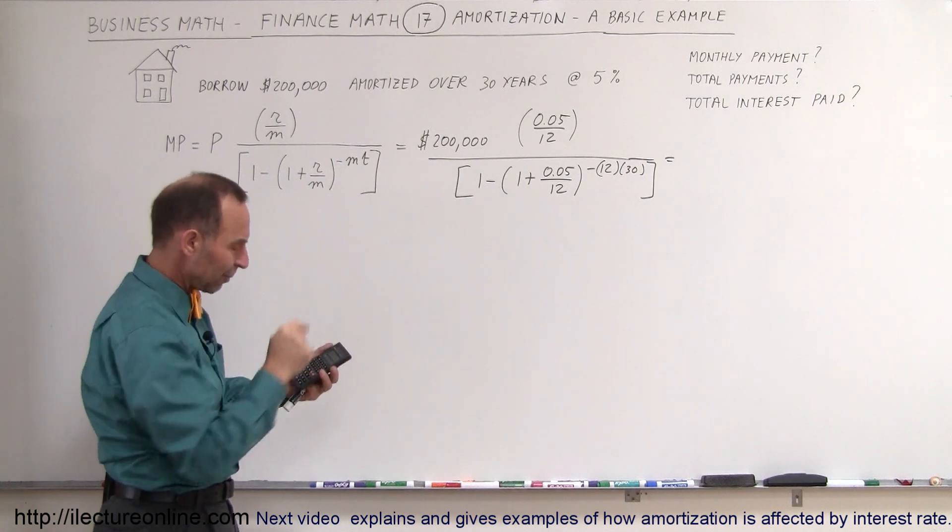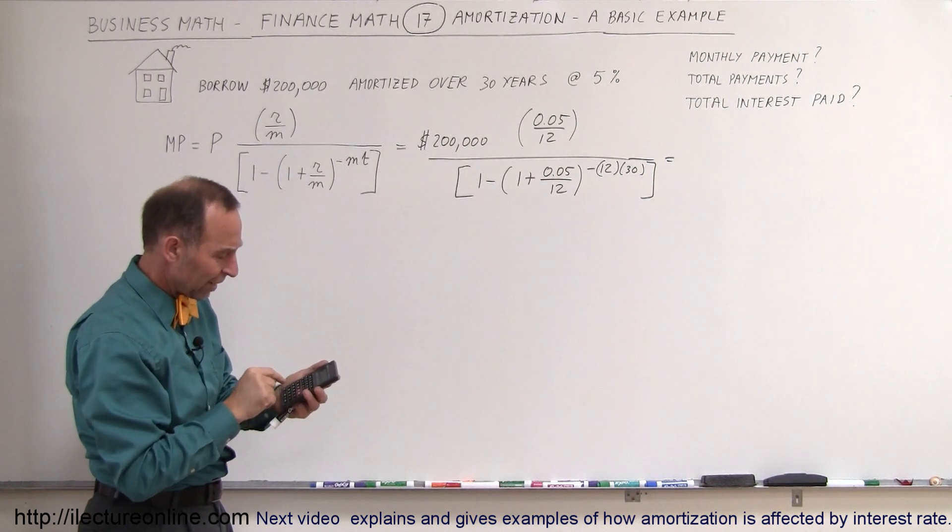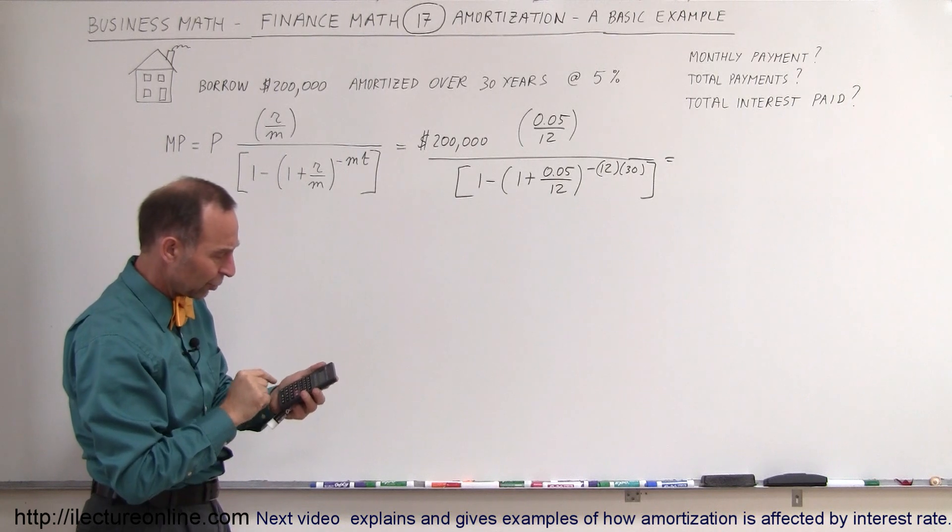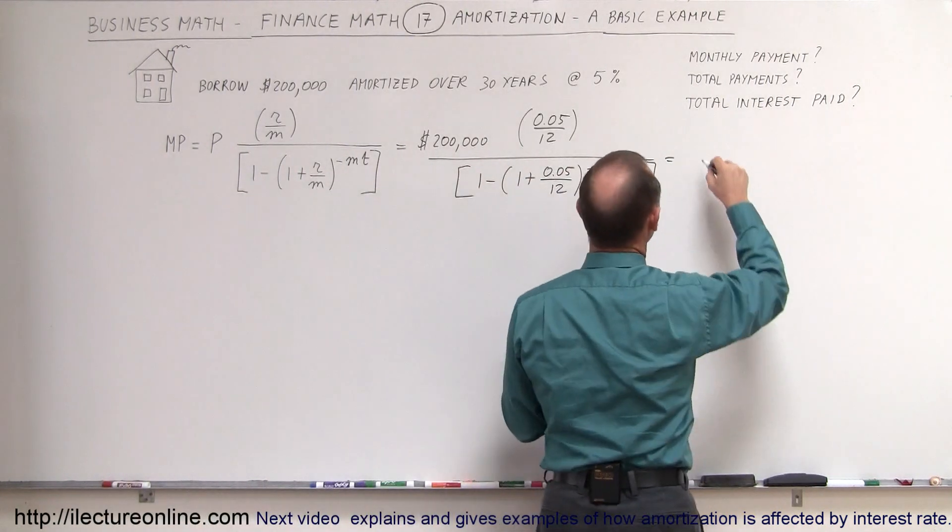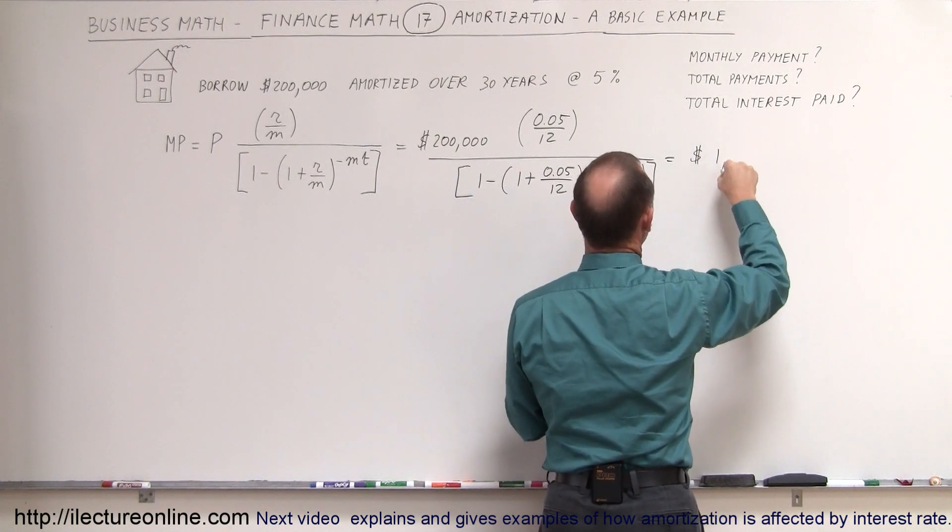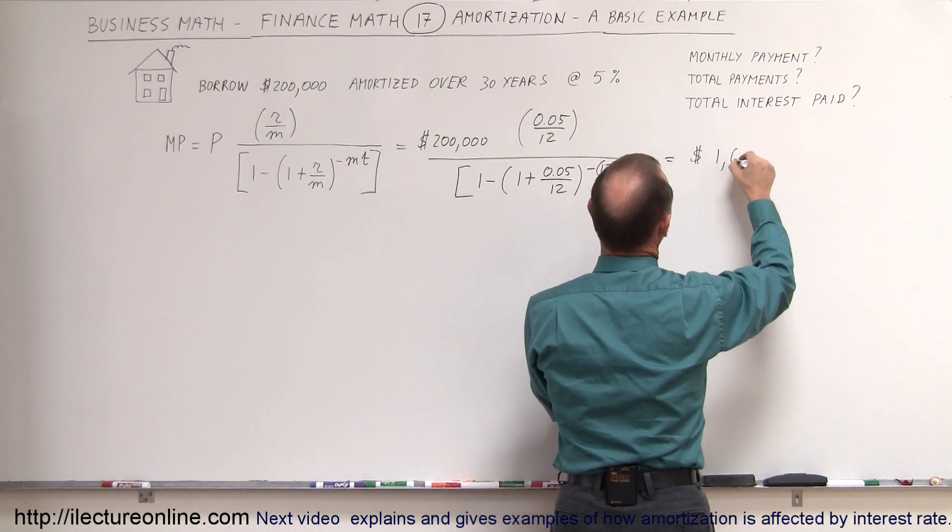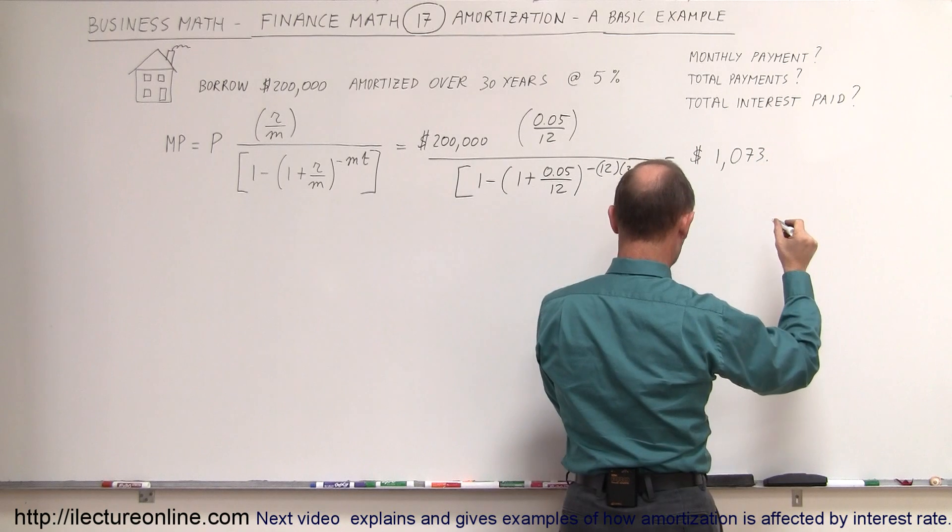Then we bring it to the numerator by hitting the 1 over x button. We multiply that times 0.05. We divide it by 12, and we multiply it times 200,000. And there it is. Monthly payment. $1,073.64.